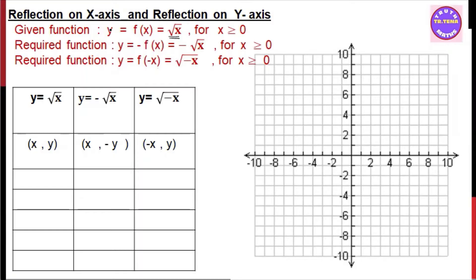Reflection on the x-axis: when y reaches x this way, x can be one minus. Then the y-axis is about y being one minus. Reflection involves zero reflections and the origin of the reflection.